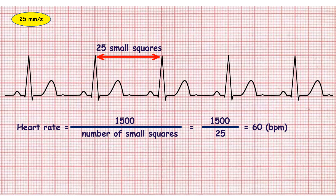The second method needs a calculator. You should count small squares between two sequential QRS complexes. If ECG speed is 25 millimeters per second, divide 1500 by the number of small squares.